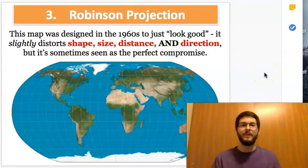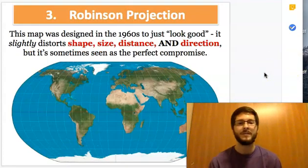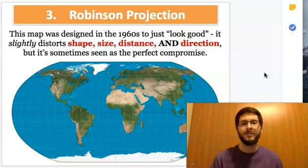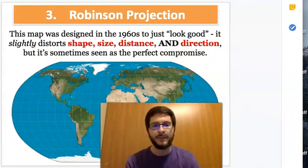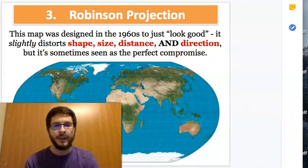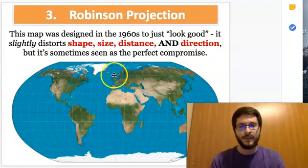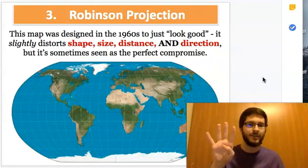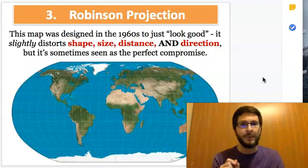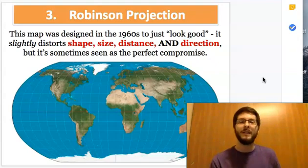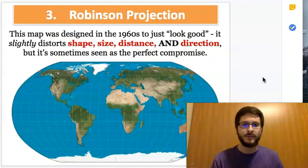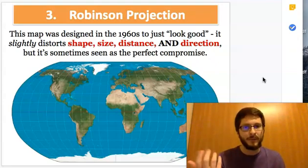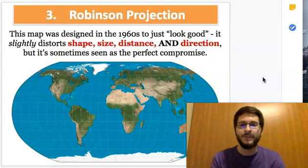Then we have one of my favorite types. It's called the Robinson. It was designed in the 1960s. The goal was just to have a good-looking map. A map that just kind of looked decent. And you can see that it looks pretty nice, but everything, each of those four things was distorted. Shape, size, distance, and direction. So it ends up being actually like a perfect compromise because everything was messed up in just a tiny, itty-bitty little bit, but at the same time, you are still left with a map that's not perfectly accurate. So I call it the perfect compromise. It's kind of up to you what you think about that.